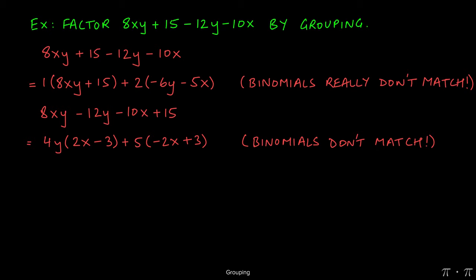We can fix this easily by factoring out a negative 5 and leaving the first part of the problem completely untouched. Doing this, we would divide negative 10x by negative 5, which would give us a positive 2x. And then 15 divided by negative 5 will give us a negative 3, which gives us the same identical binomial in both terms.